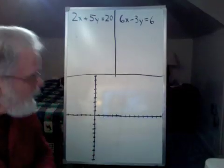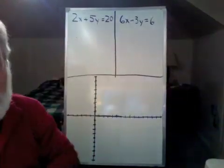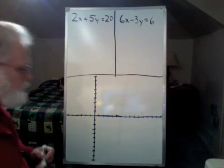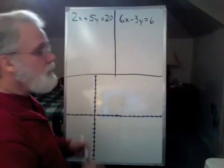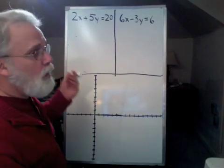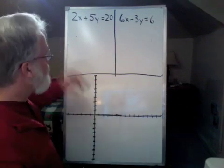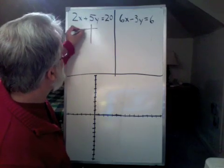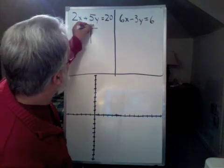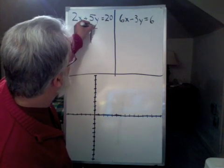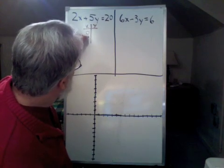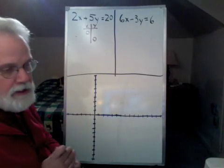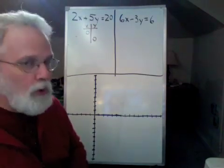We're going to start off with the same two problems that we had in part one, and this time we're going to solve them a little bit differently. Before we got the slope and the y-intercept, we plotted the y-intercept, found the slope and plotted the line. This time I'm going to take an x and a y, I'm going to set x equal to zero, and I'm going to set y equal to zero.